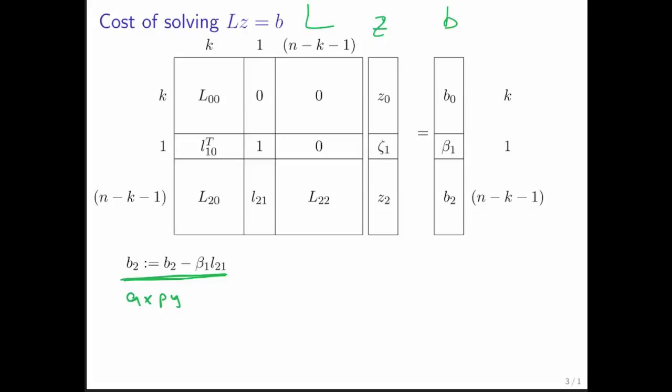Now again, we indicated what the different sizes of the matrix were. So if we ask the question, after k iterations, what is the cost of the current step? Then notice that L21 is of size n minus k minus 1. So you're performing an Axpy with vectors of length n minus k minus 1. The cost of an Axpy is 2 times the length of the vector, so that's n minus k minus 1. And again, we need to sum this over k equals 0 to n minus 1.